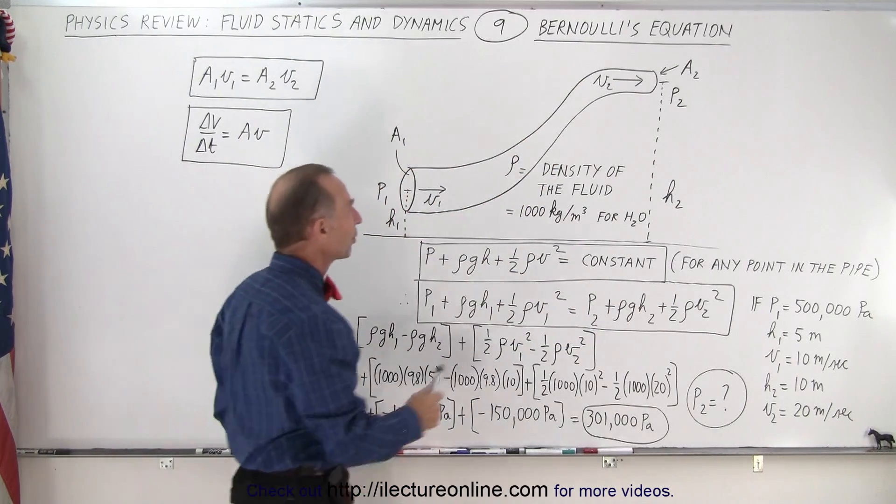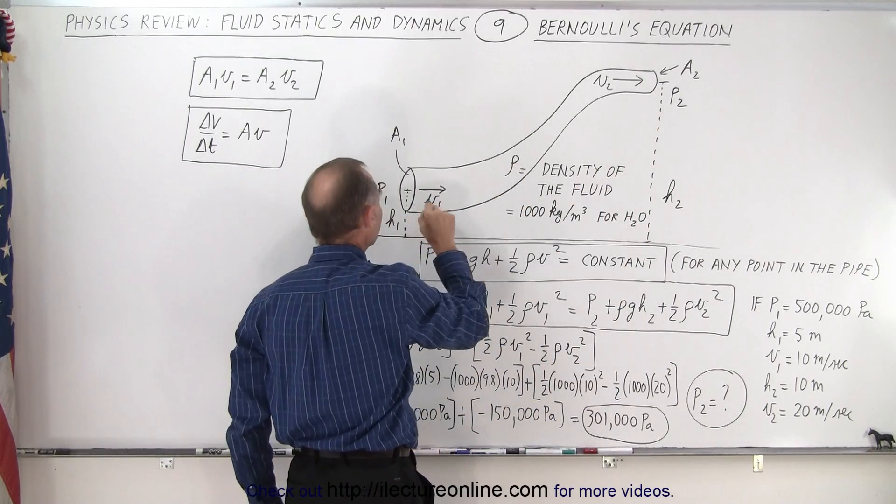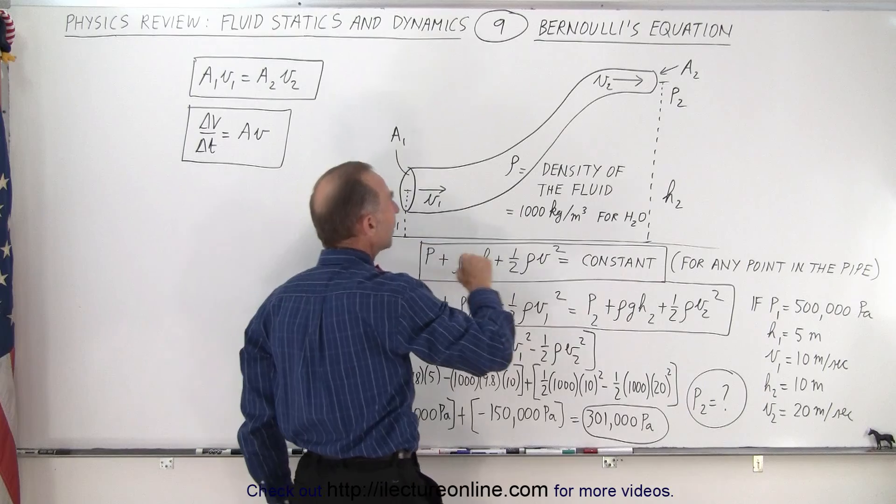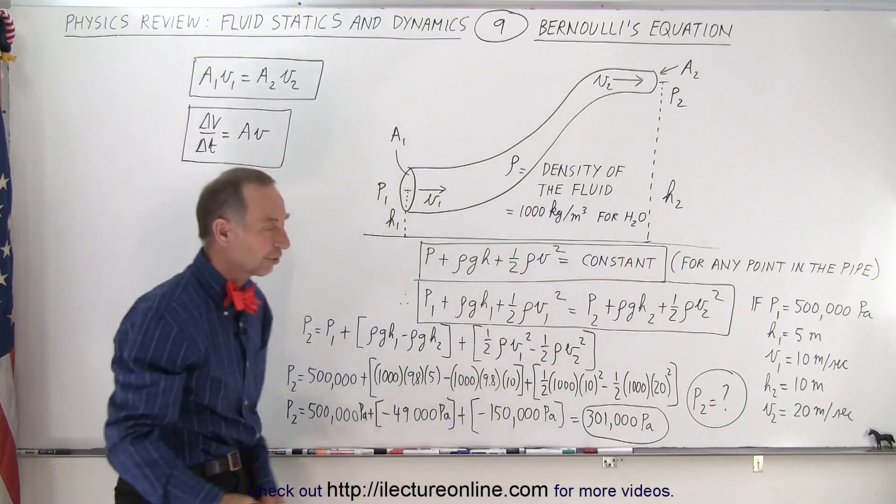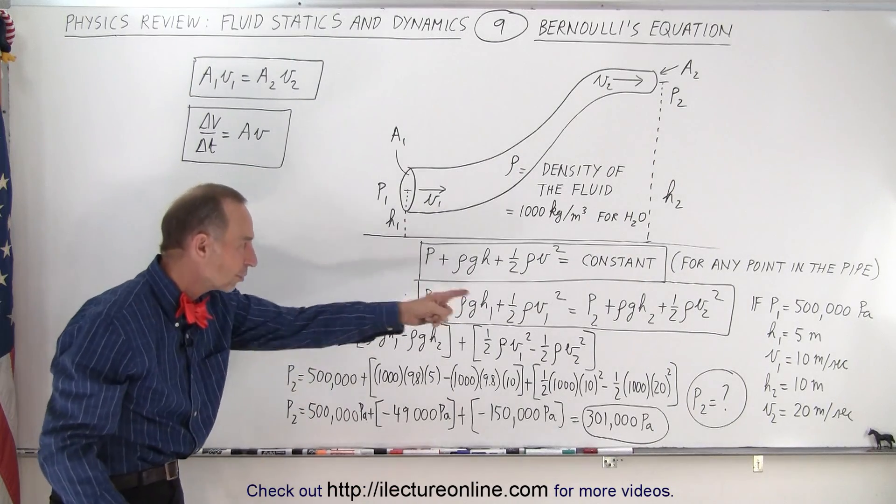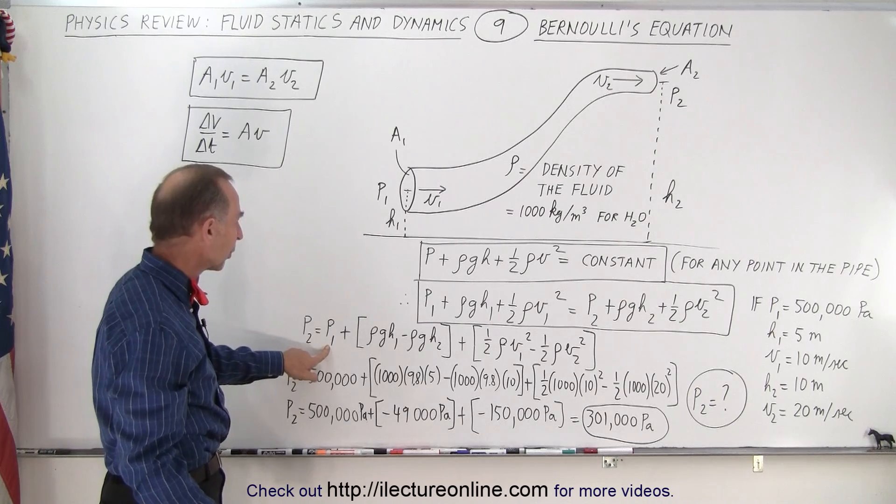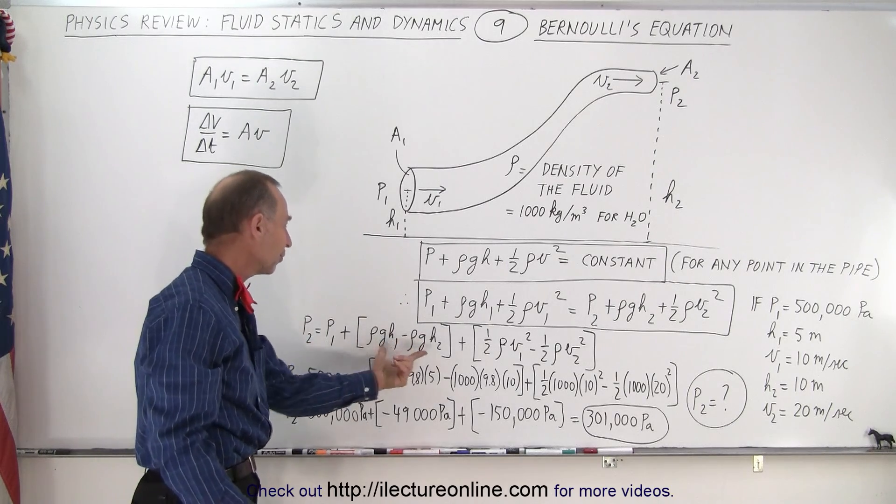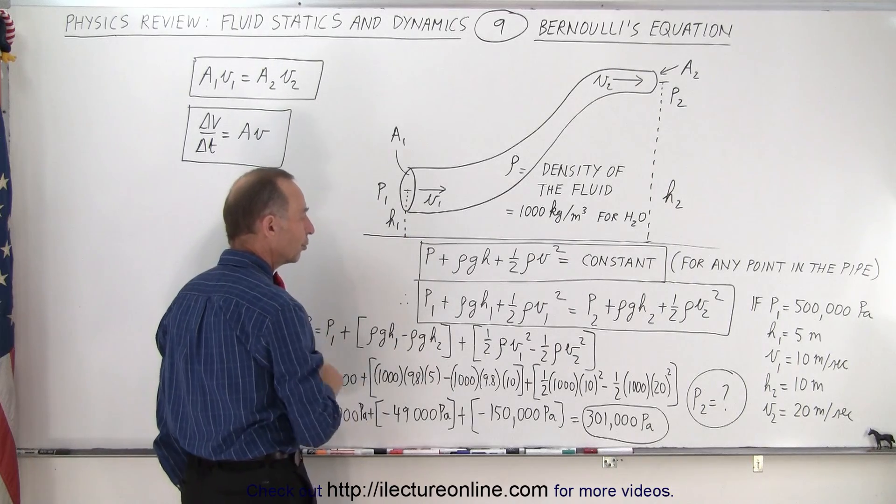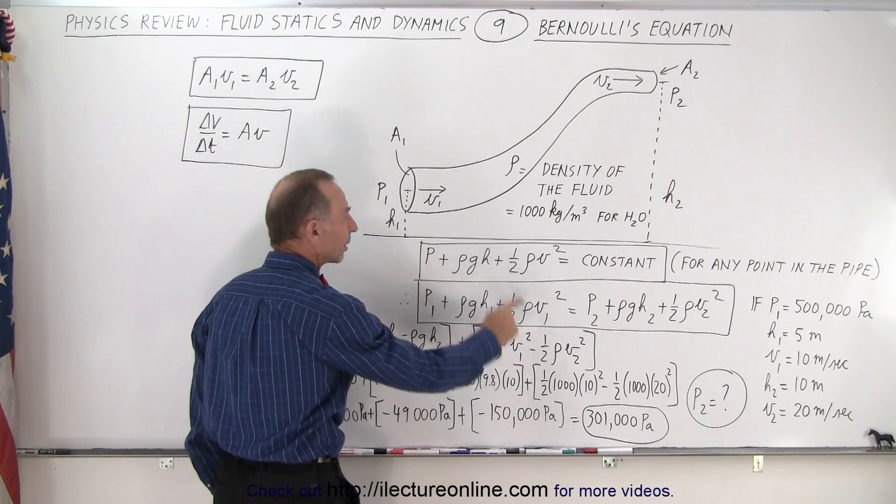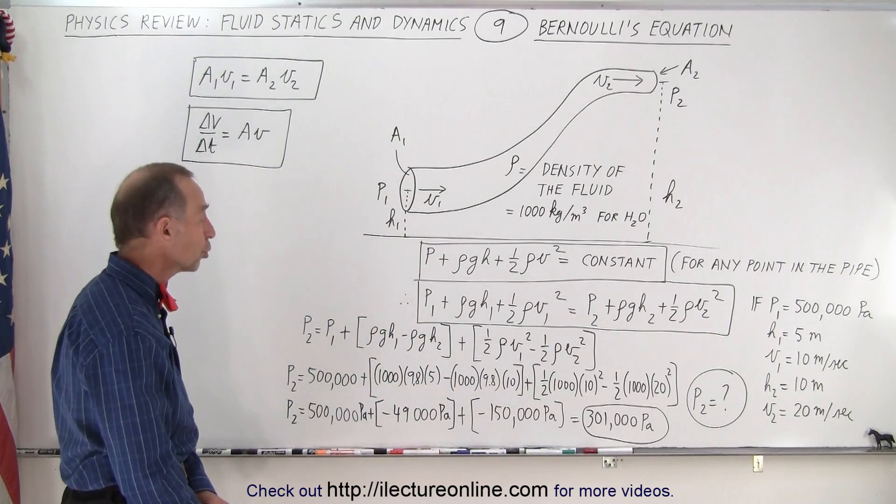So if you want to know what the pressure will be at this point when we know the pressure over here, the velocity and the height of the pipe, and we know the velocity here and the height of the pipe, we should be able to find the pressure at that point. So we solve that equation for the pressure at point two, which is equal to the pressure at point one plus the difference between the rho gh at point one and the rho gh at point two and the difference between one-half rho v one squared at point one and one-half rho v two squared at point two.